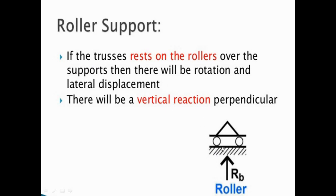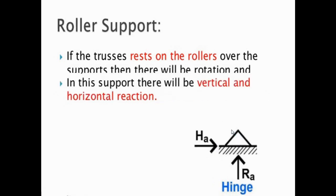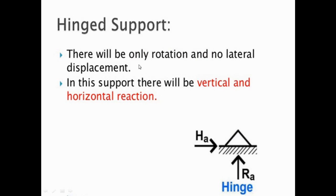For roller support, if the truss rests on rollers, you can see the roller support over the supports. There will be rotation and lateral displacement, and there will be a vertical reaction perpendicular — RB — for this roller support.